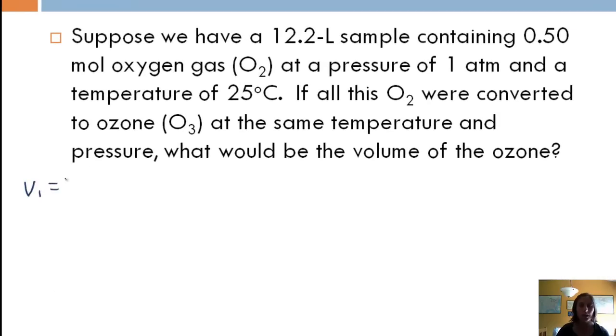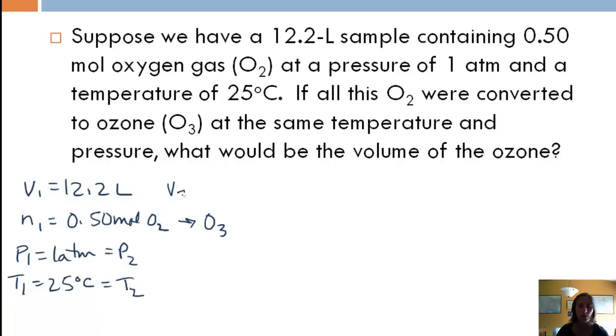So we have our V1 is 12.2 liter sample containing 0.5 moles, so N1, of oxygen gas, O2, at a pressure of one atmosphere and a temperature of 25 degrees Celsius. So our P1 equals one atmosphere, and our T1 is 25 Celsius. If all this O2 were converted to ozone, O3, at the same temperature and pressure, so this is going to equal P2, this is going to equal T2, what would be the volume of the ozone? So we're looking for V2 is what we don't know.